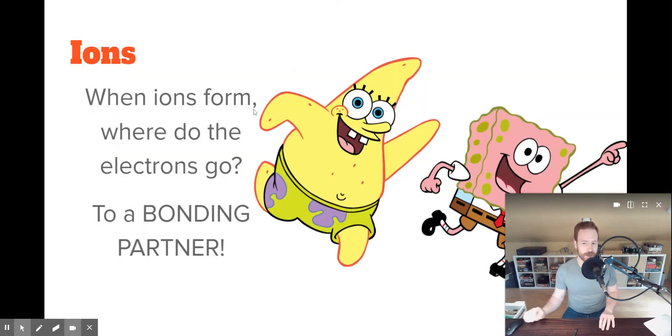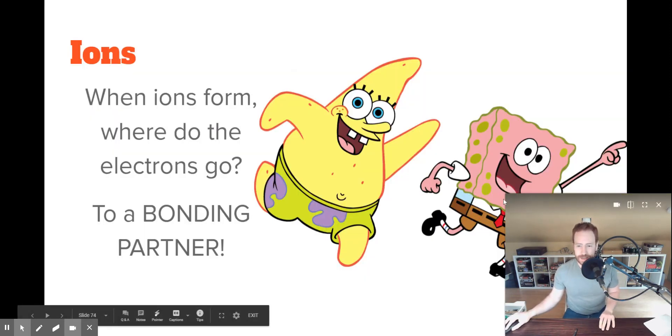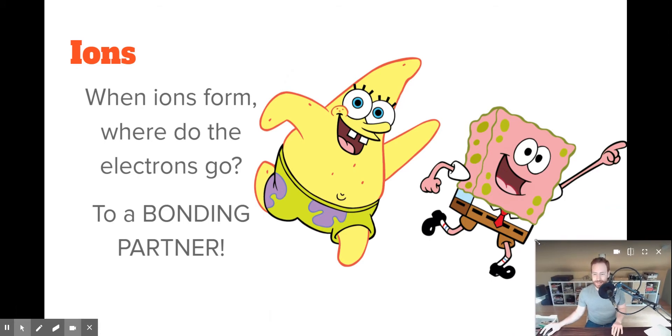Something you already know is that atoms have electrons, and those electrons exist in orbitals, and those orbitals form levels. And the most important level is the valence shell. And that valence shell wants to have eight electrons in it. And an atom is going to do whatever it needs to do in order to achieve that desire, which we call the octet rule.